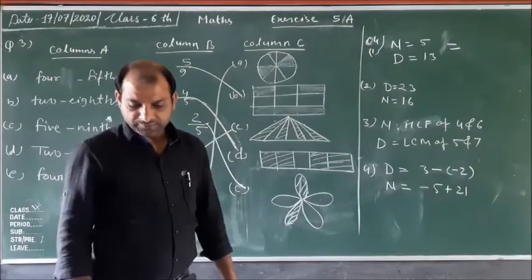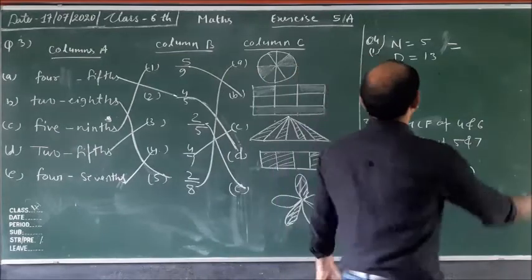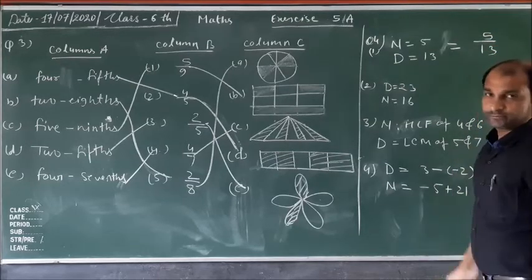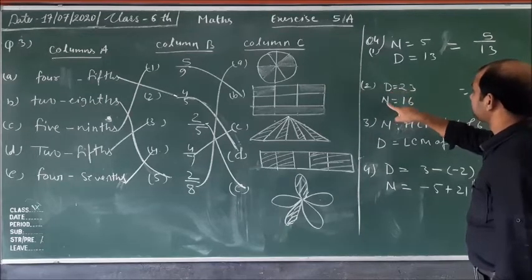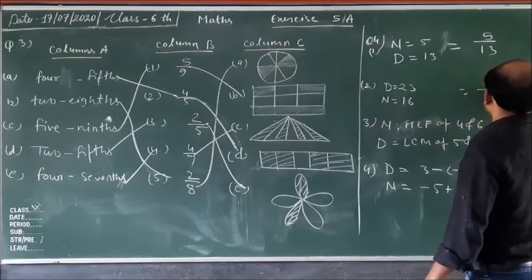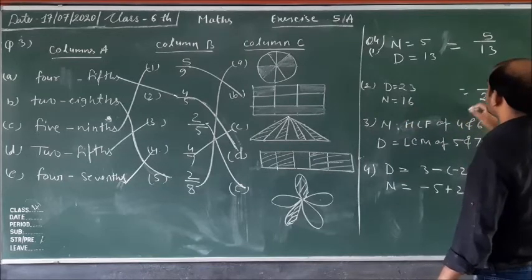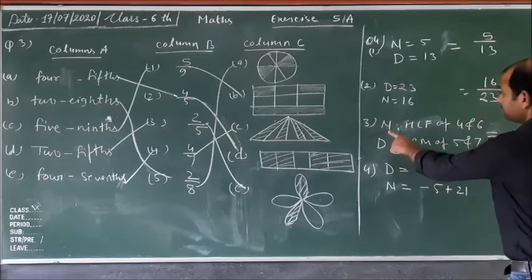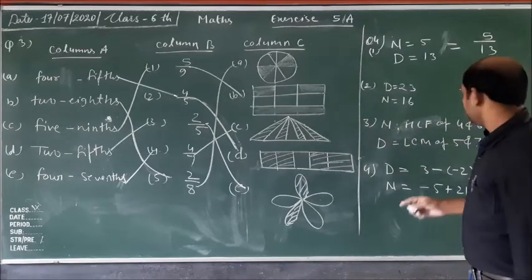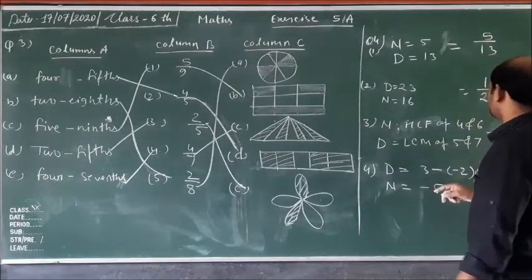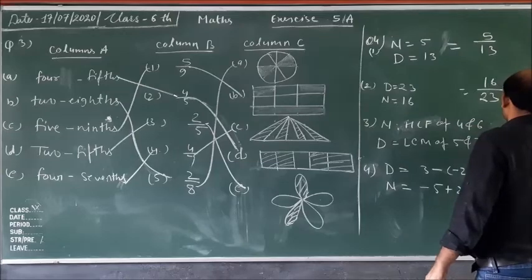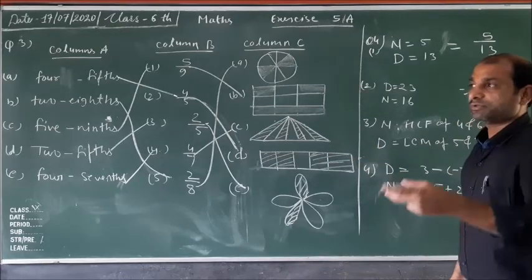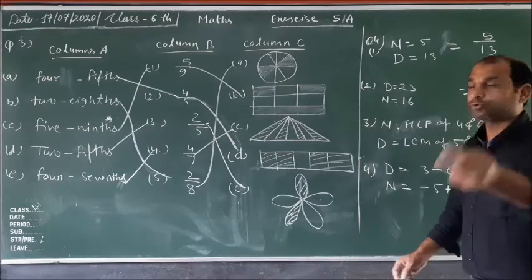Now question number four: write a fraction as indicated. Here, numerator is 5 and denominator is 13, so we write 5 upon 13. Next, denominator is 23 and numerator is 16, so we write 16 upon 23.